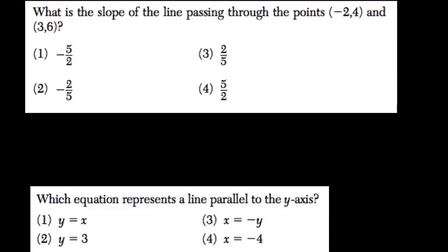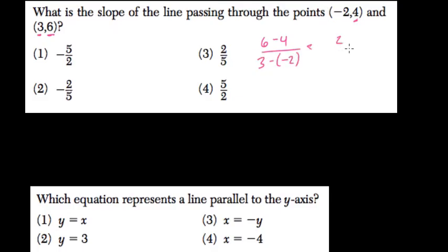Well, slope is delta y over delta x. So we subtract our y's: 6 minus 4, over our x's: 3 minus negative 2. 6 minus 4 is 2. 3 minus negative 2 is 3 plus 2, or 5. So our slope is 2 fifths.